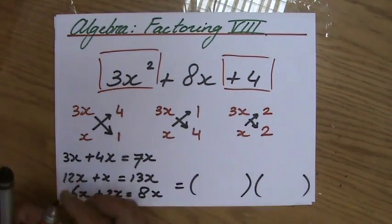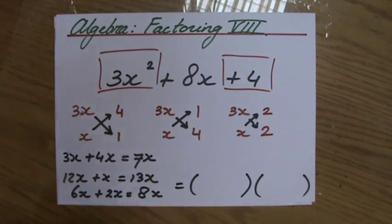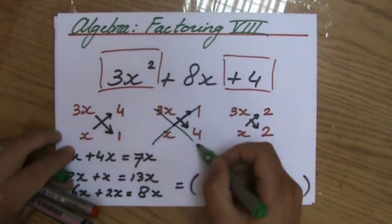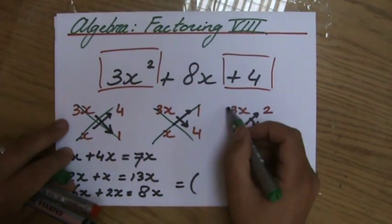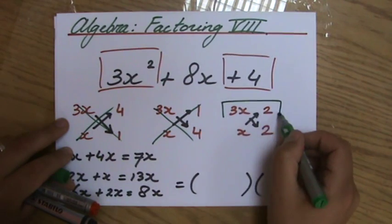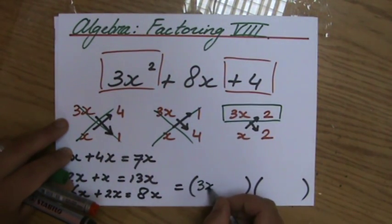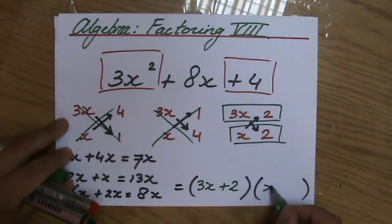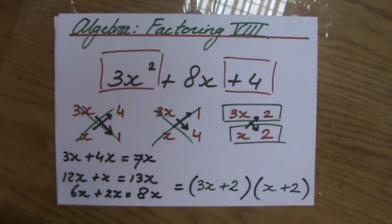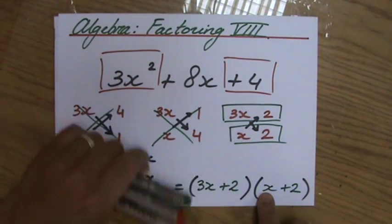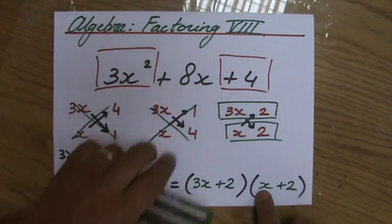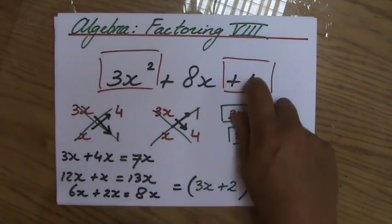Just one final step now. What goes inside those brackets? Be careful here — this is just scrap paper work. I go not diagonally, I go now horizontally. So 3x plus 2, and in the other set of brackets, x plus 2. If I quickly check: 3x times x is 3x squared, 6x plus 2x is 8x, 2 times 2 is 4.